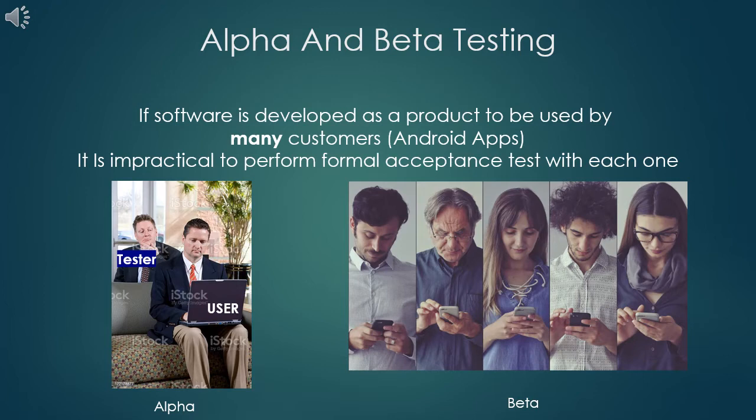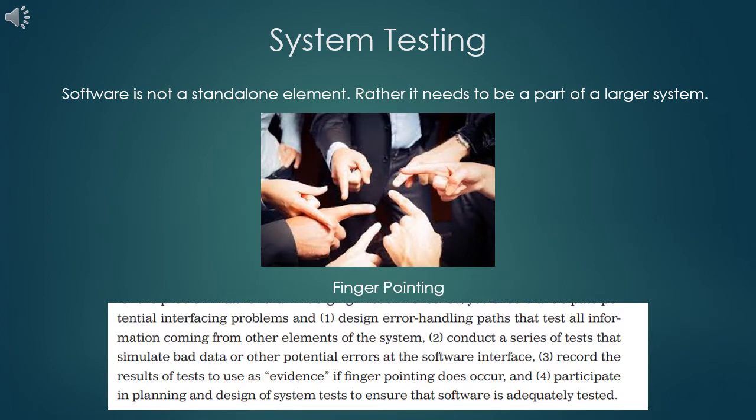This concludes alpha testing and beta testing. Now let us briefly see what is system testing. System testing is also typically conducted after unit testing and integration testing have been done. But unlike validation testing, system testing is done within the organization or within the IT industry by the developers themselves. A software is not a standalone product; rather, a software product is supposed to work as a part of a system.